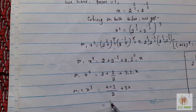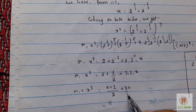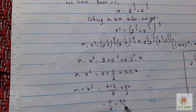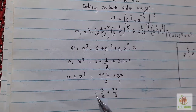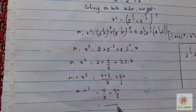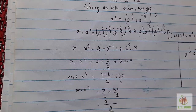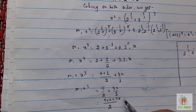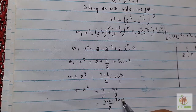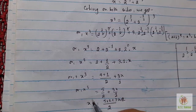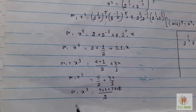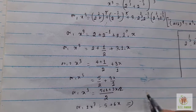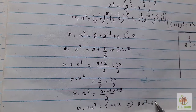Taking the LCM of 3x and 5/2: multiplying both sides by 2, we get 2x³ = 5 + 6x. This implies 2x³ - 6x = 5.